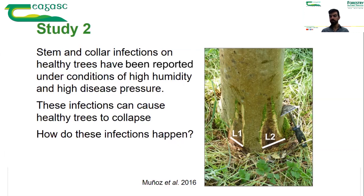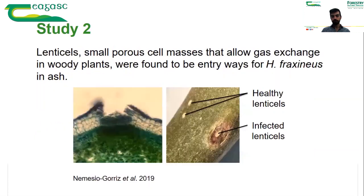If the fungus didn't infect the tree through the leaves, how could it do it? Our work tried to answer that question. What we found is that lenticels — small pores in the bark of woody plants — may provide the answer. A section of an ash lenticel shows how the bark splits and there is a small mass of cells which are the lenticels, allowing gas to move between the inside and outside of the plant, allowing it to breathe.